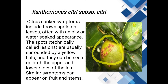Symptoms of citrus canker: bronze spots with yellow halo, oily water-soaked appearance. Symptoms appear on the leaf surface — upper surface, lower surface — with yellow halo around the spots visible on leaves, fruit, and stem.